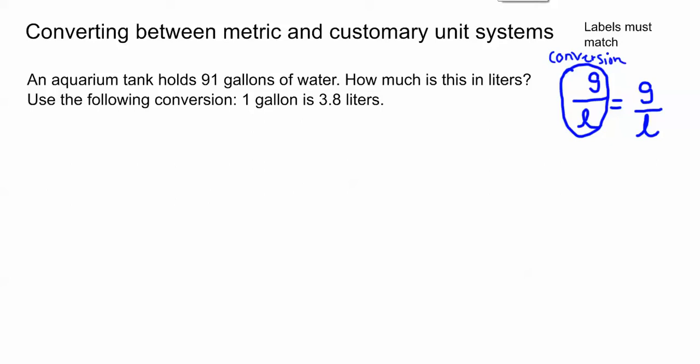In this video we're going to be discussing how to convert between metric and customary unit systems. In this first question we're talking about gallons and liters. Gallons is a unit of measure in the customary system and liters is a unit of measure in the metric system.